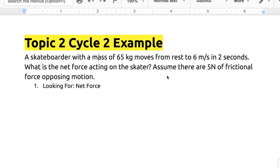So here we have a skateboarder with a mass of 65 kilograms moves from rest to 6 meters per second in 2 seconds. What is the net force acting on the skater? And assume that there are 5 newtons of frictional force opposing motion. So what are we looking for? We're looking for the net force.